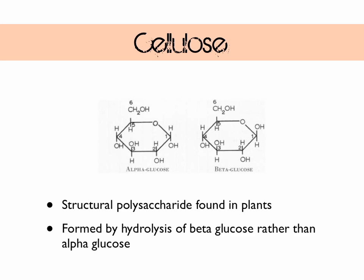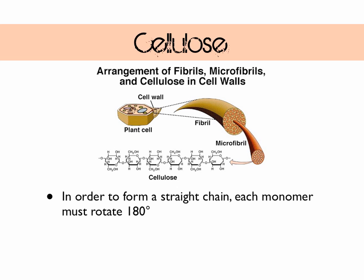We can see the difference between alpha and beta glucose in the picture. On alpha glucose, going anti-clockwise from carbon-6, the OH groups go up, down, up, down, down. On beta glucose they go up, down, up, down, up. At carbon-1, the OH group and the hydrogen are switched. In order to form a straight chain, each monomer needs to rotate 180 degrees - following where the CH2OH groups are in the diagram, we can see each monomer along has rotated 180 degrees: bottom, top, bottom, top, and so on.